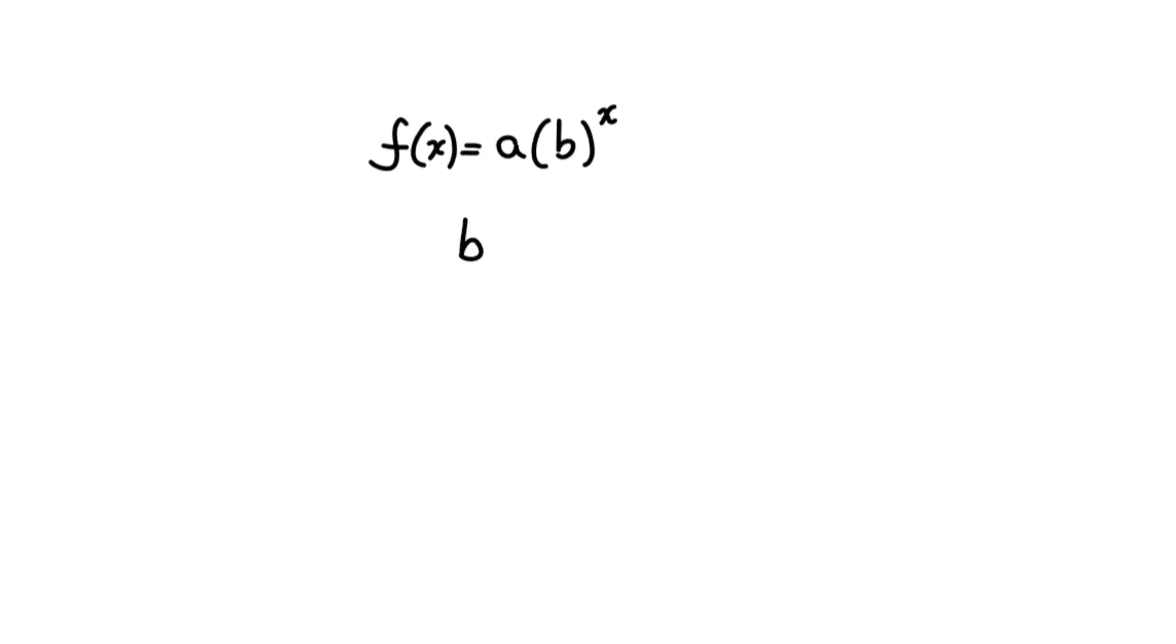When b is greater than 1, then we're observing exponential growth. And when b is greater than 0 but less than 1, then we observe exponential decay.